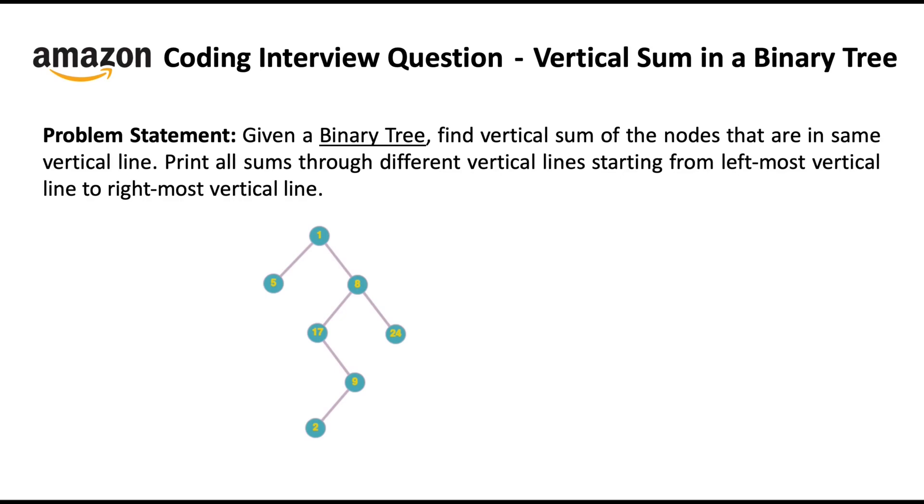Okay, so let's get back to the problem. Here the first vertical line has node 5. The second vertical line has nodes 1, 17 and 2. The third vertical line has nodes 8 and 9. And the fourth vertical line has node 24.